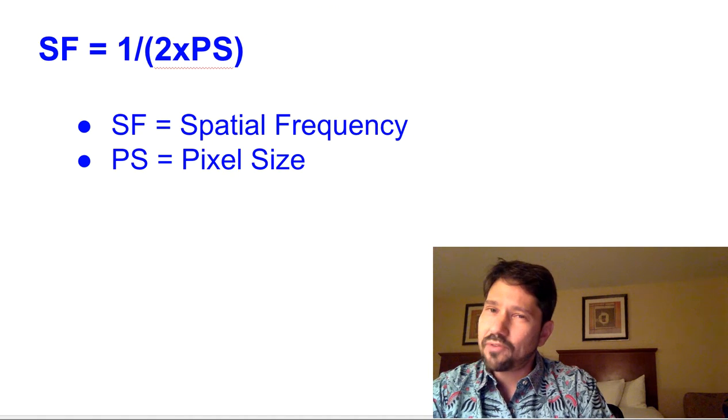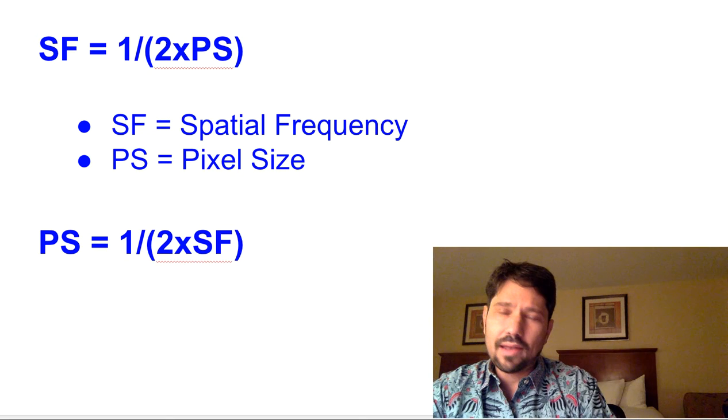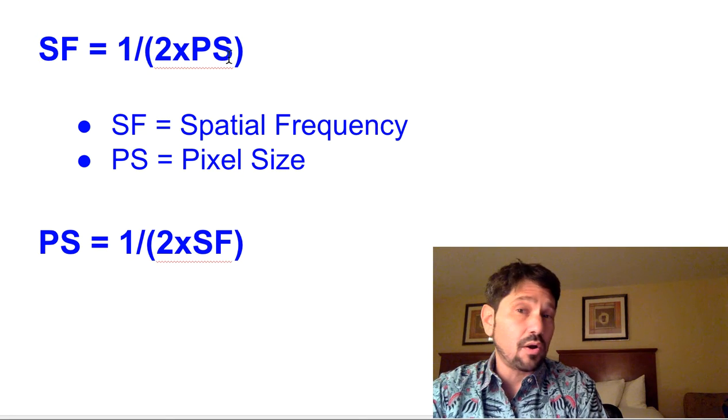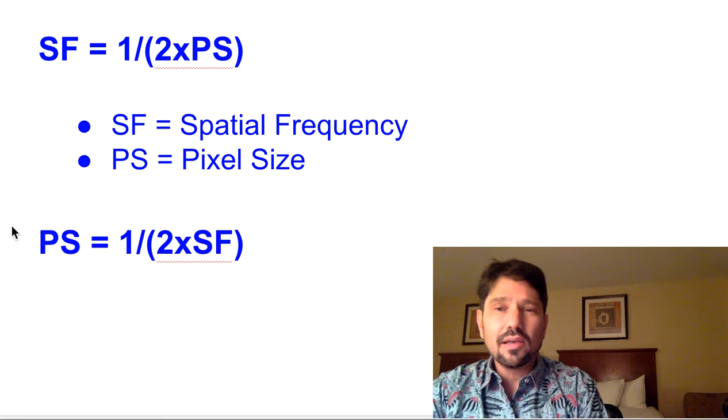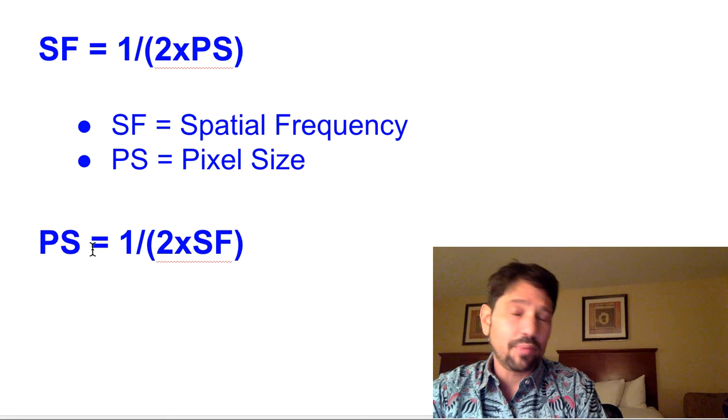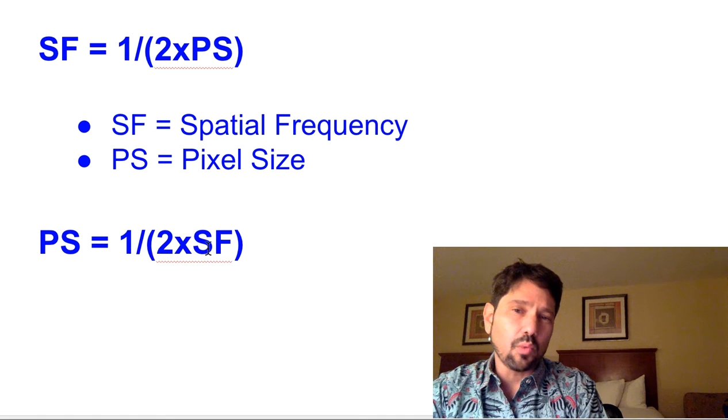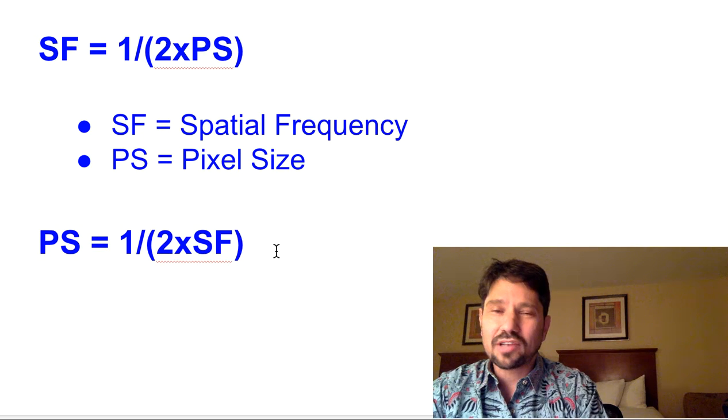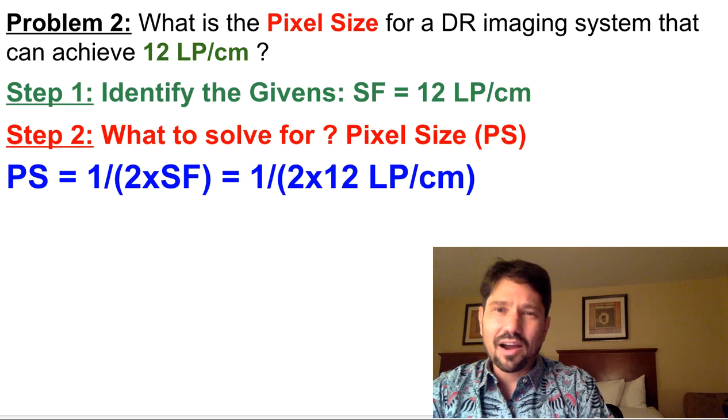So, again, we know our formula, and now we've got to be able to convert. All right, our formula said spatial frequency is 1 over 2 times pixel size. You'll need to do some algebra to be able to say, well, pixel size then must equal 1 over 2 times spatial frequency. I will leave that algebra as an exercise for the student.